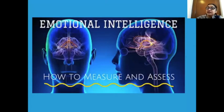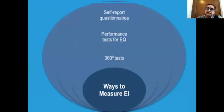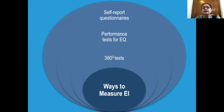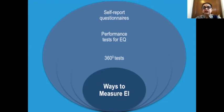Many people have tried to measure emotional intelligence, and it is very difficult to do. We have self-report questionnaires where you build a scale to assess your own emotional state — how and why you're feeling as you are. There are also performance tests for EQ. And of course 360-degree tests, where superiors, subordinates, peer group, customers, and top management — all stakeholders in how you perform — evaluate your emotional intelligence. These are the common ways to measure EI.